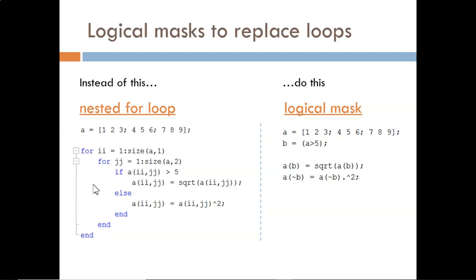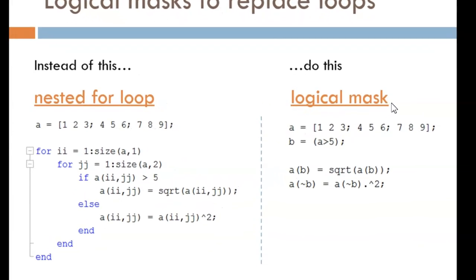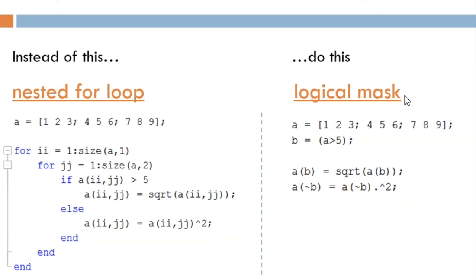We can make the code more efficient to type and run through the use of a logical mask as shown here. First, a mask named B is created which holds true values for all the large numbers. Then, at indices where we have a large number, reassign those values to be square roots of the current values. Then, at indices where we do not have a large number, reassign those values to be squares of the current value.